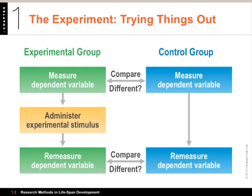Whether someone gets the special program or not is a variable called the independent variable — the one you get to manipulate and control. The dependent variable is the outcome that's supposed to change because of the independent variable. Experimenters also try to maintain experimental control by randomly assigning people to conditions and keeping everything else the same for both groups. This allows you to say the only reliable difference between the two groups is the independent variable you manipulated — which is why randomized experiments are considered the gold standard for cause-and-effect research.